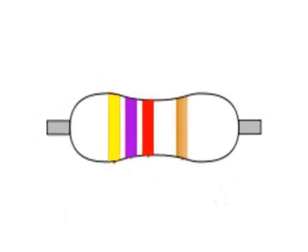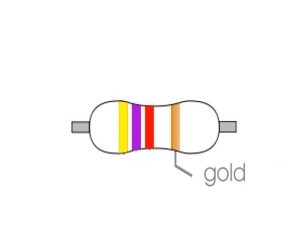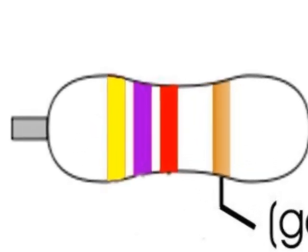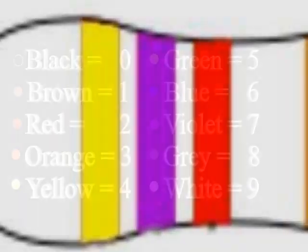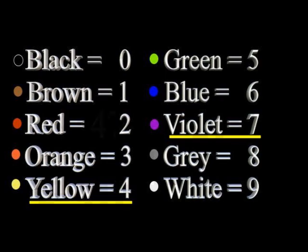This resistor's color code is yellow, violet, red, gold. The gold band isn't part of the value code. It tells us the tolerance of the resistor. Gold band resistors are accurate to within 5% of their stated value. The colored bands yellow, violet, red represent the value of this resistor. Here is how you interpret this code. Checking the color key, we see that the first two colors, yellow and violet, represent the numbers four and seven. Record those two values.